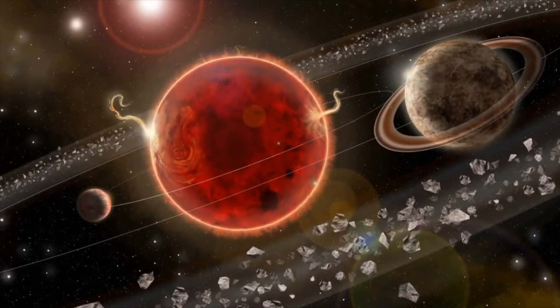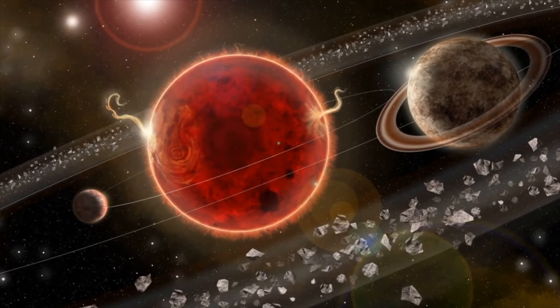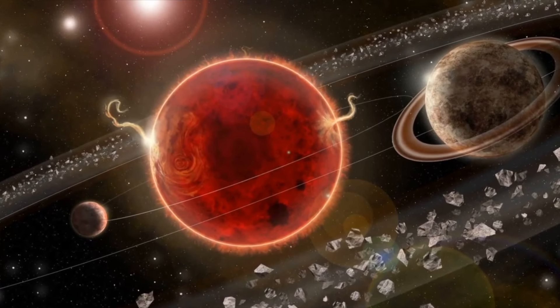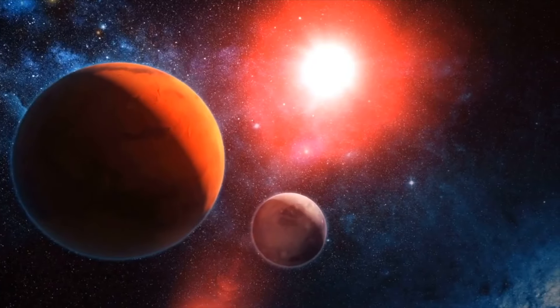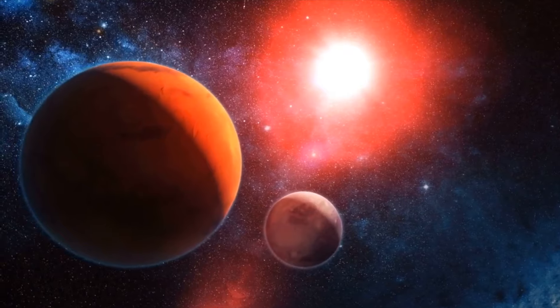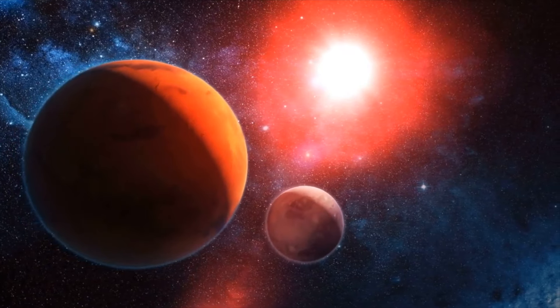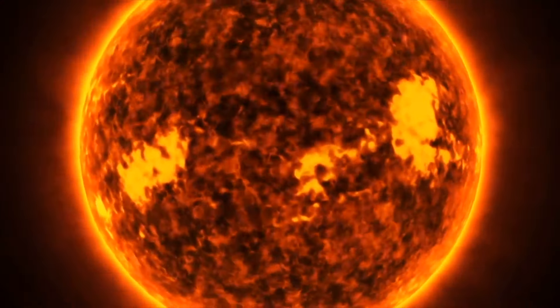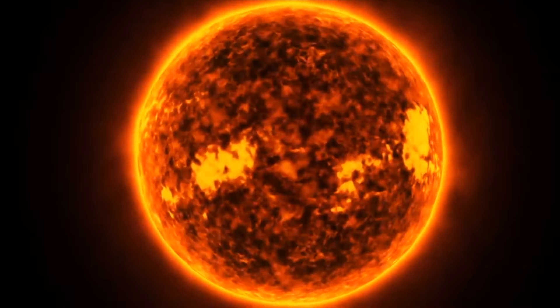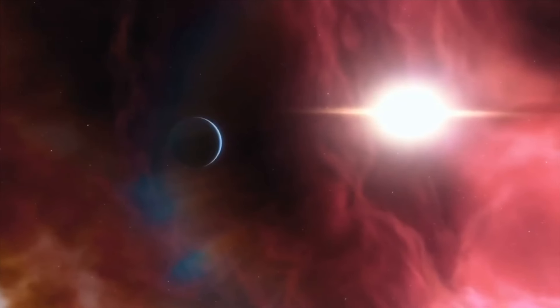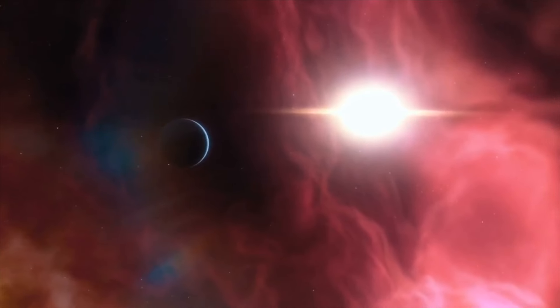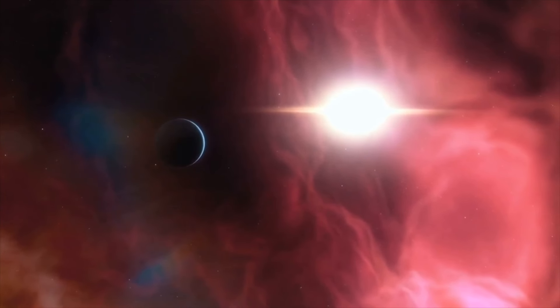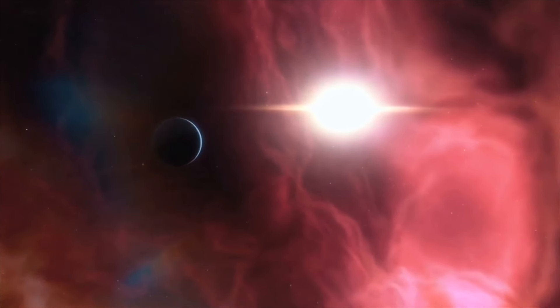As a red dwarf, Proxima Centauri is the energy-efficient superstar of the cosmos, relying on internal convection processes to shine for trillions of years. It is expected to stay in its main-sequence star phase for another 4 trillion years. However, being a red dwarf comes with a flare for the dramatic, with frequent and unpredictable flares. As a lightweight star, its habitable zone is closer compared to our Sun, estimated between 0.023 and 0.054 astronomical units.